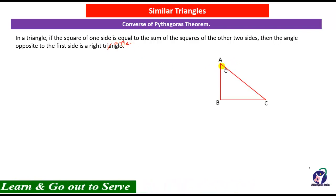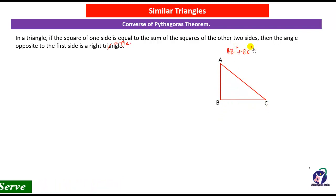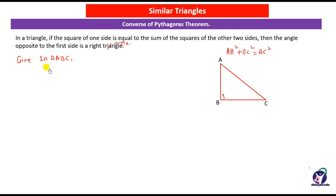Given: triangle ABC in which AB² + BC² = AC². We have to prove that angle B is 90 degrees. So given: in triangle ABC, AB² + BC² = AC². To prove: angle ABC = 90 degrees.